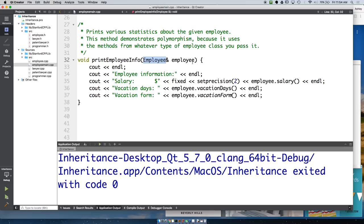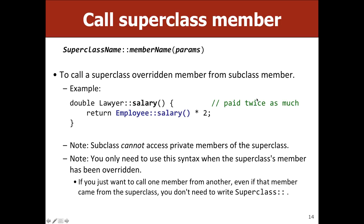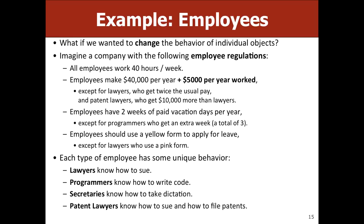To summarize what we've covered: we can add extra behavior to a subclass, like being able to sue. We can also have different implementations for inherited methods, like paying a lawyer more. Now the question is: what if we want to change behavior at the instance level? Not all lawyers are the same. To do that, we generally need a constructor that takes in different parameters.